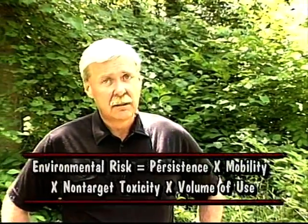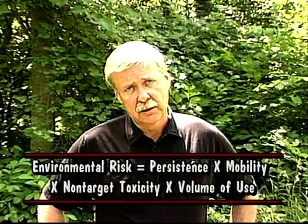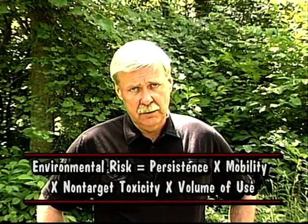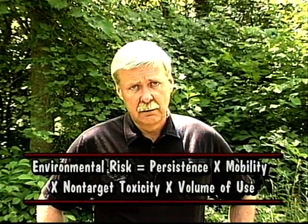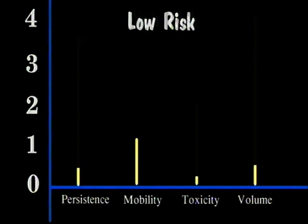Environmental risk can be summarized in this equation: environmental risk equals persistence times mobility times non-target toxicity times volume of use. Environmental risk is minimized when any of these risk factors is close to zero.